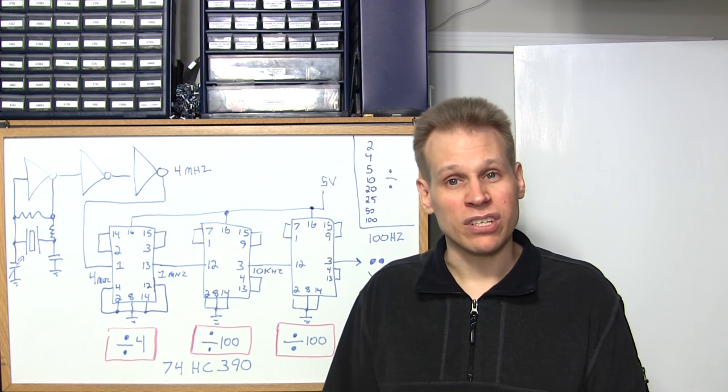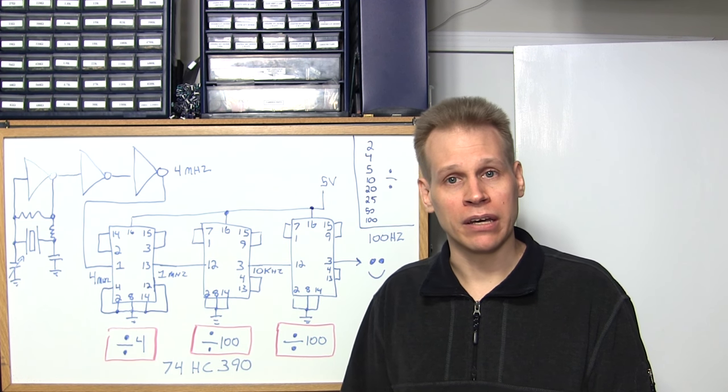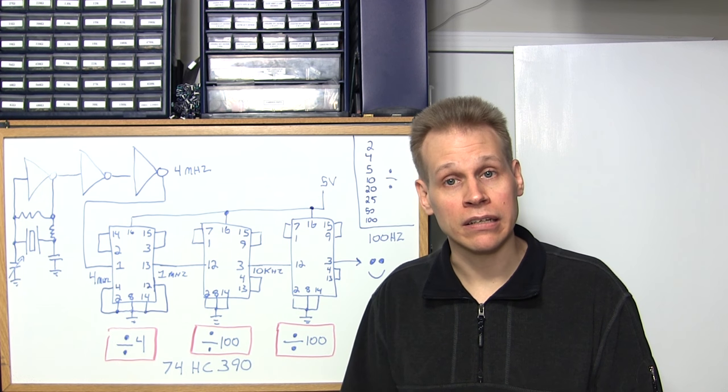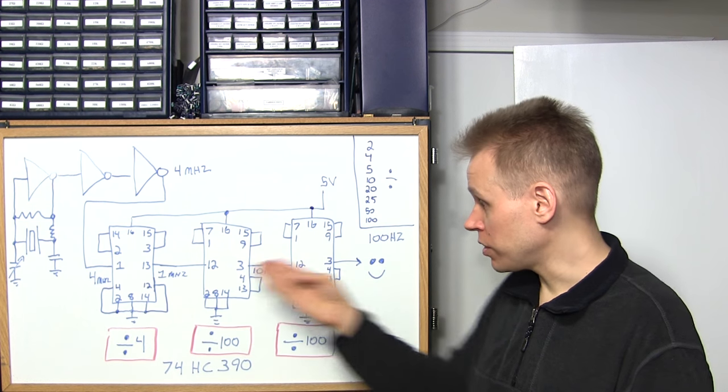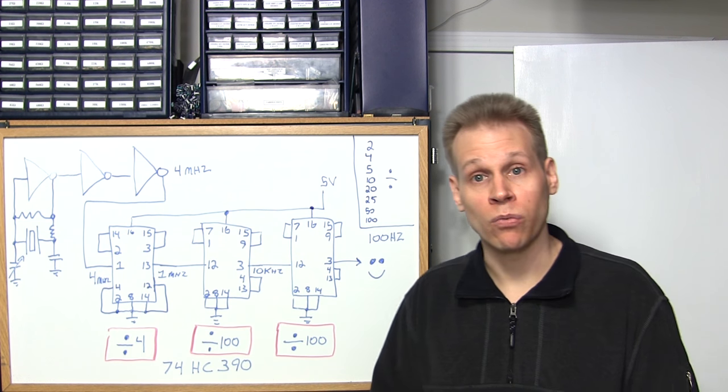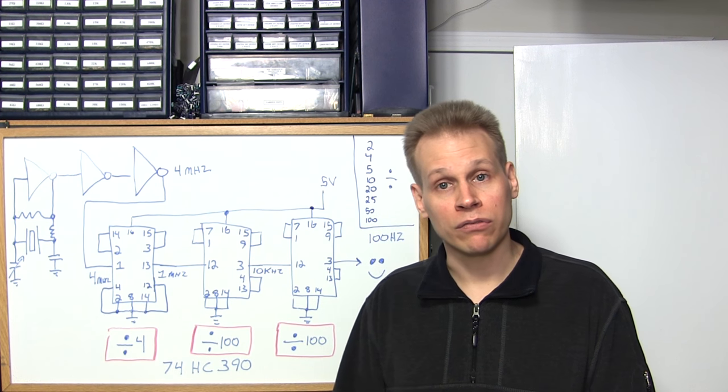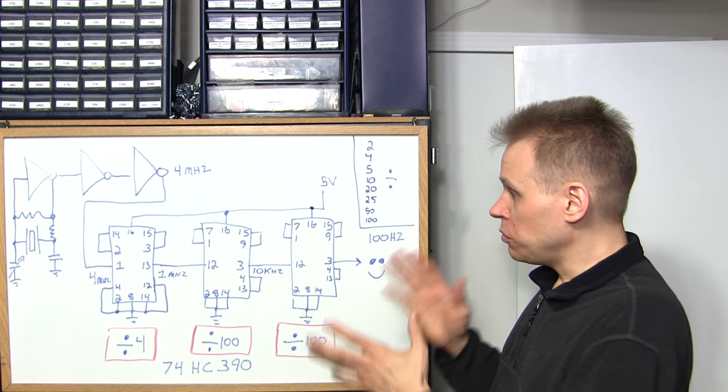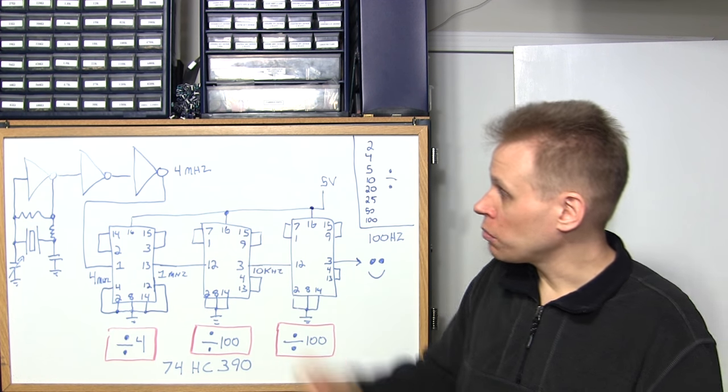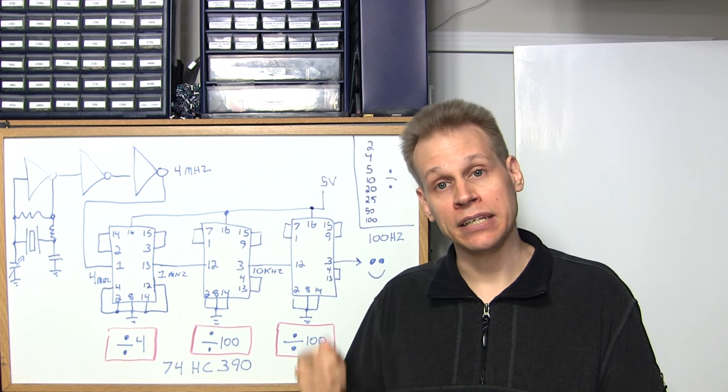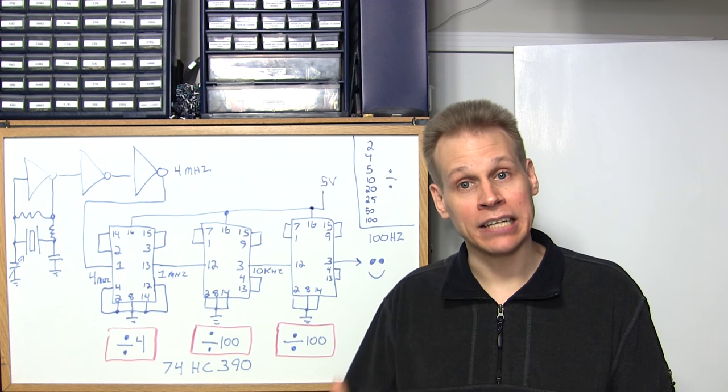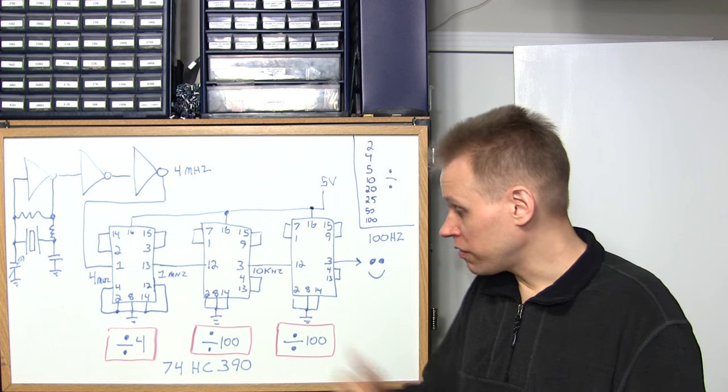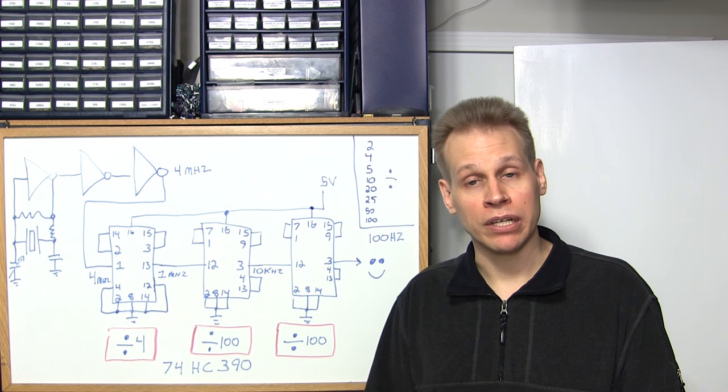You're probably thinking, how do you use a 4 megahertz crystal to make a frequency counter work and how does that work out mathematically? Technically it doesn't. That's why we need this frequency division chain to give us what we need which is 100 hertz. That's the frequency that our little frequency counter design is going to run off of. In order to make this work I need to take 4 megahertz, divide it by 4, then divide that by 100 and then again divide that output by 100. The perfect IC for that is the 74HC390.